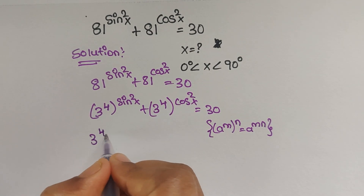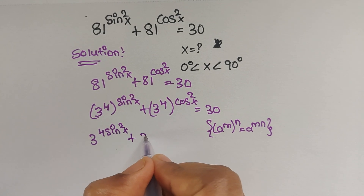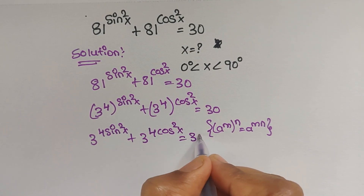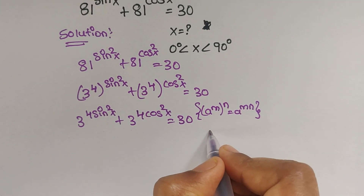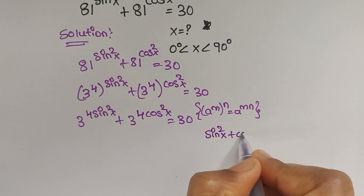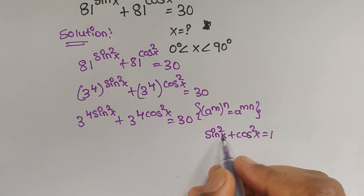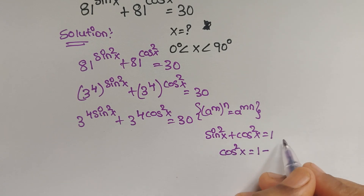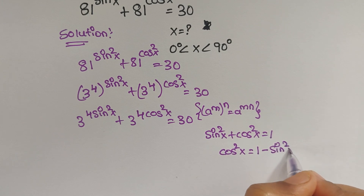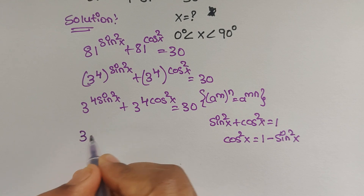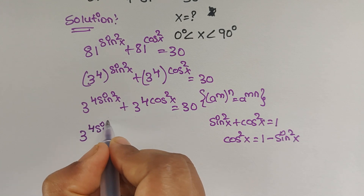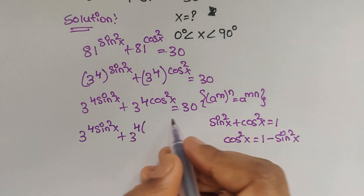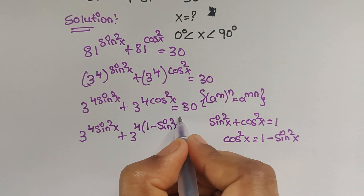Using this formula, we can write 3 to the power of 4sin²x plus 3 to the power of 4cos²x equals 30. Now, since sin²x plus cos²x equals 1, we can write cos²x equals 1 minus sin²x. Substituting, we get 3 to the power of 4sin²x plus 3 to the power of 4(1 minus sin²x) equals 30.